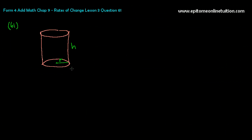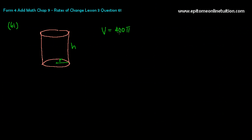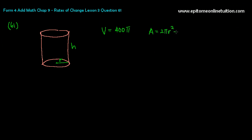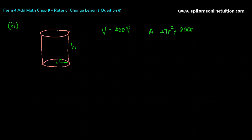It says the volume of a cylinder with radius r and height h is 400π. So volume is 400π centimeter cube, I'm just going to write 400π. And let's look at the question. Part A says show that the area of the closed cylinder, A centimeter square, is equal to 2πr² plus 800π over r.